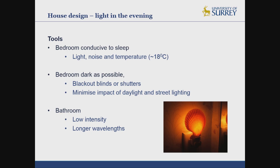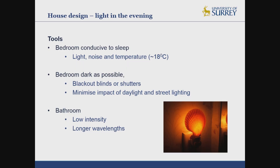In terms of light in the evening, we need to make the bedroom as conducive to sleep as possible — minimising light, minimising noise, and optimising the temperature, with around 18 degrees being about optimal for sleep. We also need to minimise the impact of any daylight or street lighting outside. We also need to consider that people may get up in the night to go to the bathroom — it doesn't take long for light to have a very alerting effect and make it difficult to go back to sleep — so bathrooms should have low-intensity light using these longer wavelengths.